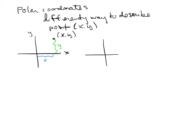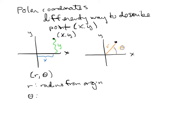With polar coordinates, it takes that exact same x-y point and describes it with a certain radius r from the origin, and a value of theta that is always measured from the positive x-axis. So polar coordinates are an r and a theta, where r is the radius from the origin and theta is an angle from the positive x-axis.